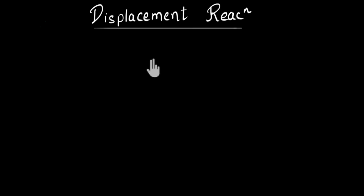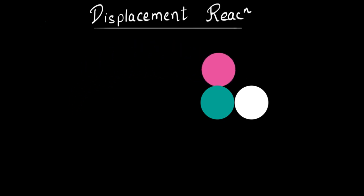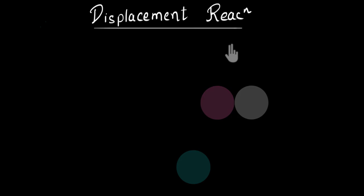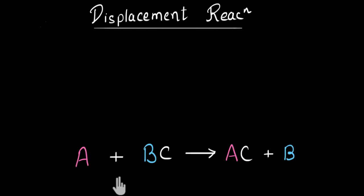In this video, we are going to talk about displacement reactions. In these kinds of reactions, a more reactive element displaces a less reactive one from its compound. The general equation looks like this: A is a more reactive element and B is a less reactive element forming a compound BC. A will displace B, kick it out, and form compound AC. Finally, B is separated out.